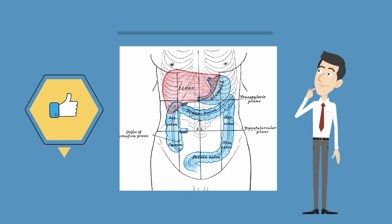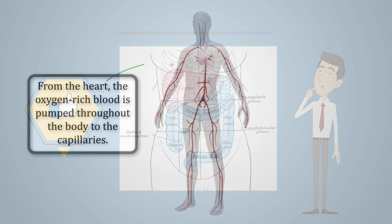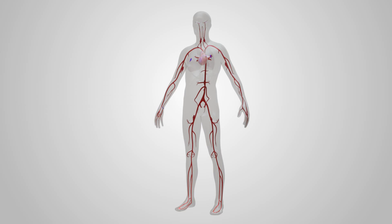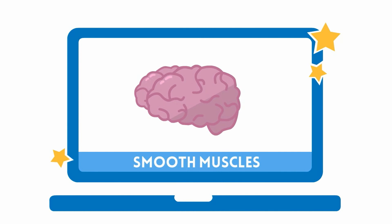Smooth muscles are found inside the digestive tract and inside veins and arteries. Smooth muscles are involuntary muscles, which means you do not have to think about them in order for them to work, and they help with the movement of food, waste, and blood throughout our body.